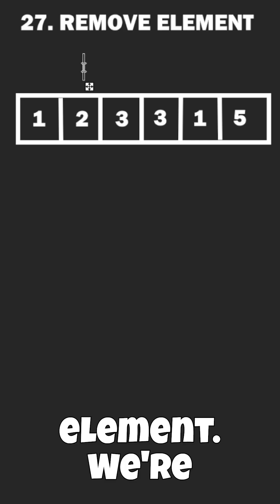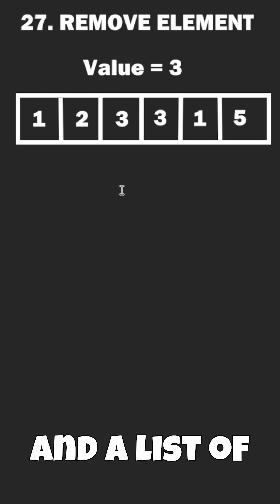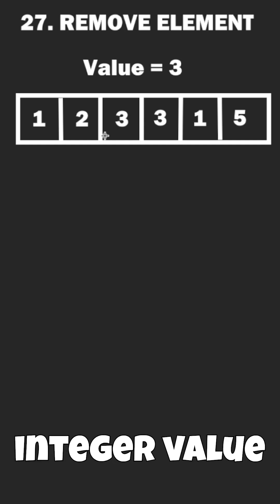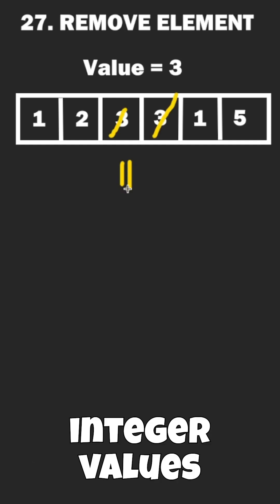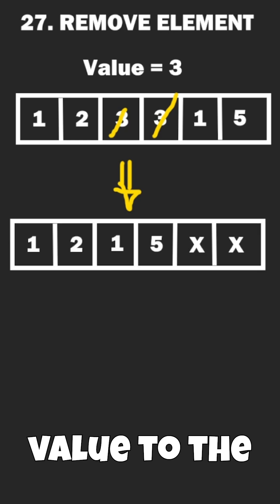Leetcode 27, remove element. We're given an integer value and a list of integers. We want to remove the integer value from our list and move all integer values that are not equal to the value to the front.